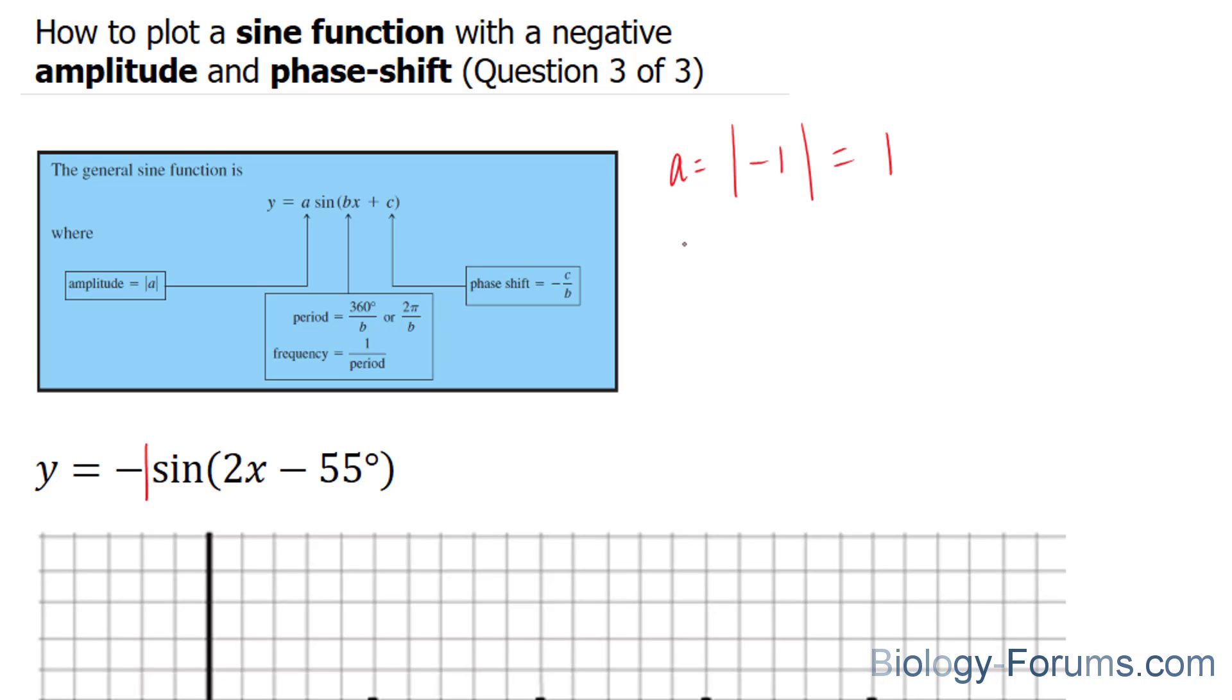Next, we have to indicate our b value, and our b value is 2. The b value is always the coefficient of the variable. And finally, the c value, which enables us to find the phase shift, is negative 55.